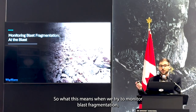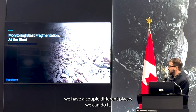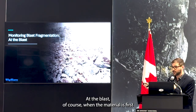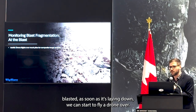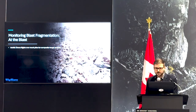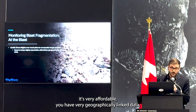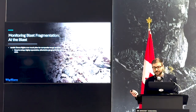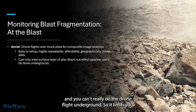So what this means when we try to monitor blast fragmentation — we have a couple different places we can do it. At the blast, when the material is first blasted and as soon as it's laying down, we can pull our drone over and use an aerial approach to measure the fragmentation. Which is great — it's easy to set up, highly repeatable, very affordable, and you have very geographically linked data. But we have that Brazil nut effect: you can only view the surface layer of the pile, and you can't really do the drone thing underground. So it limits you.